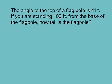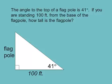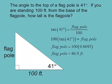The angle to the top of a flagpole is 41°. You're standing 100 feet from the base. How tall is the flagpole? Draw a right triangle: 41° angle, adjacent = 100 ft, opposite = flagpole height. Tangent of 41° = flagpole/100, so multiply both sides by 100: flagpole = 100 × tan(41°) ≈ 87 feet.